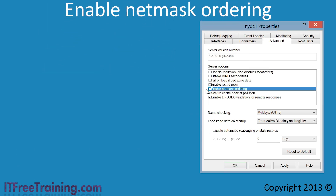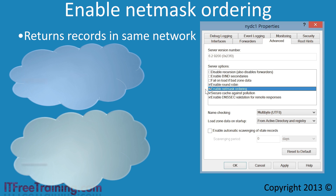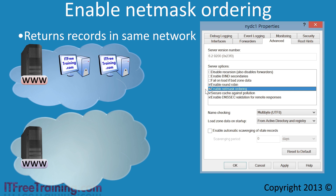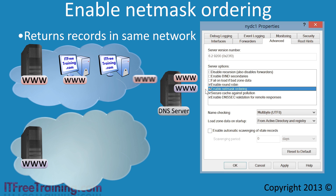The next option is enable net mask ordering. When enabled, the DNS server will attempt to return DNS records that are in the same network as the client. Consider that you have 2 networks, each with a web server responding to requests for www. If you have 2 clients on the first network, the first client will contact the DNS server asking for the IP address of www and will obtain the IP address of the server on the first network. When net mask ordering is enabled, the second desktop computer will also obtain the same DNS record, because net mask ordering always attempts to return a record in the same network as the client, even when round robin is also enabled.